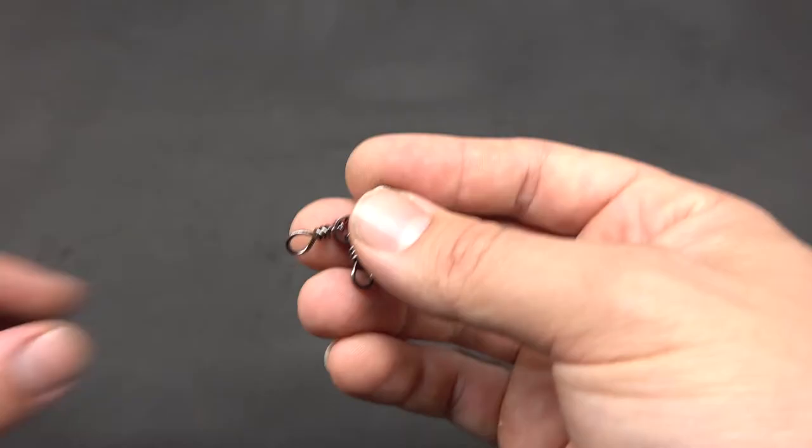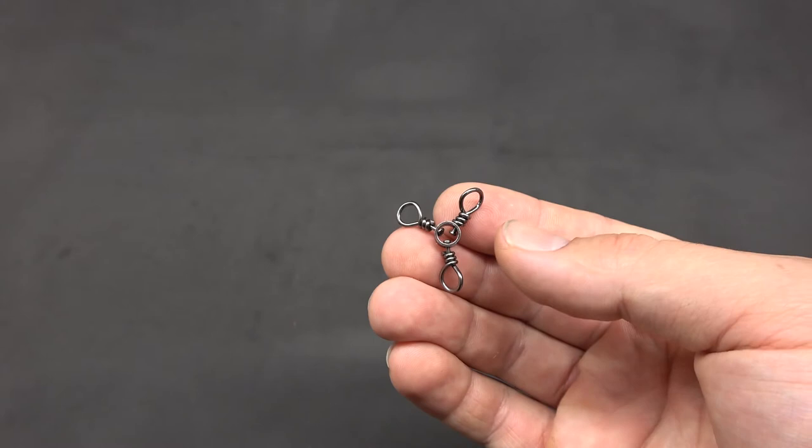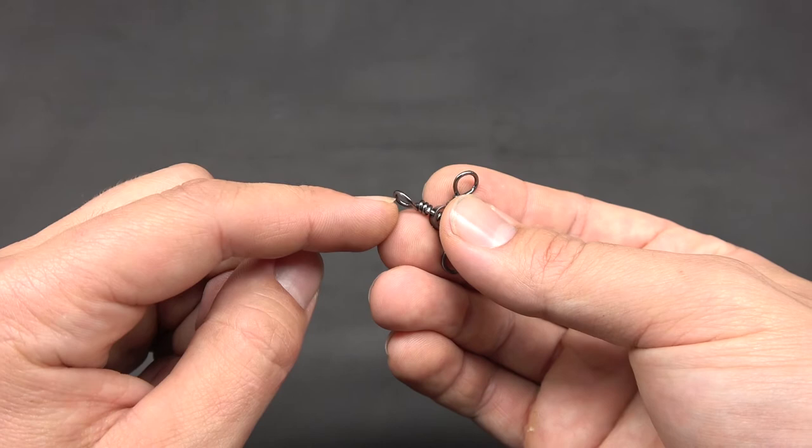Then you're going to need a three-way swivel. You can also tie this rig with a regular swivel, but you're going to have to make two connections in one of these eyes. When you have a three-way swivel, you only have to make one connection per eye.